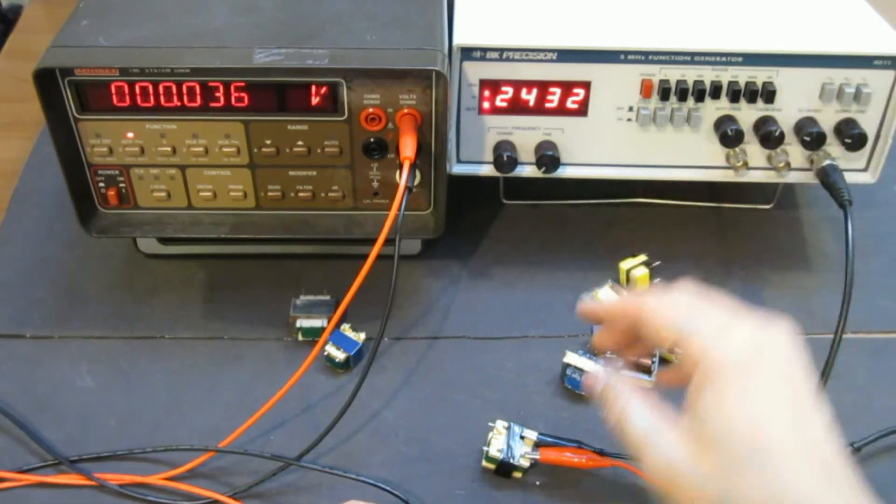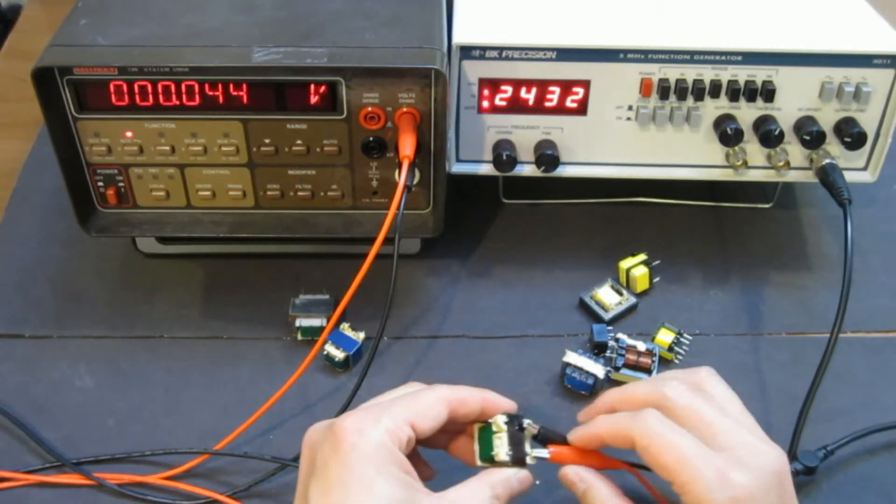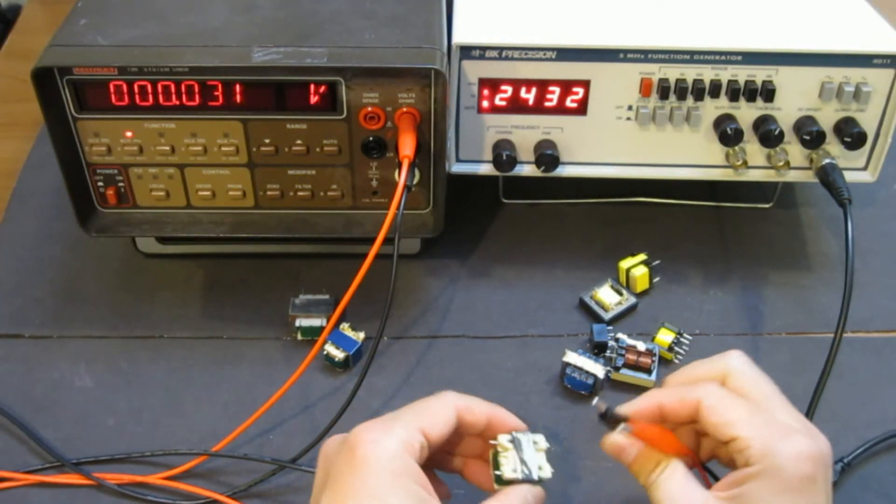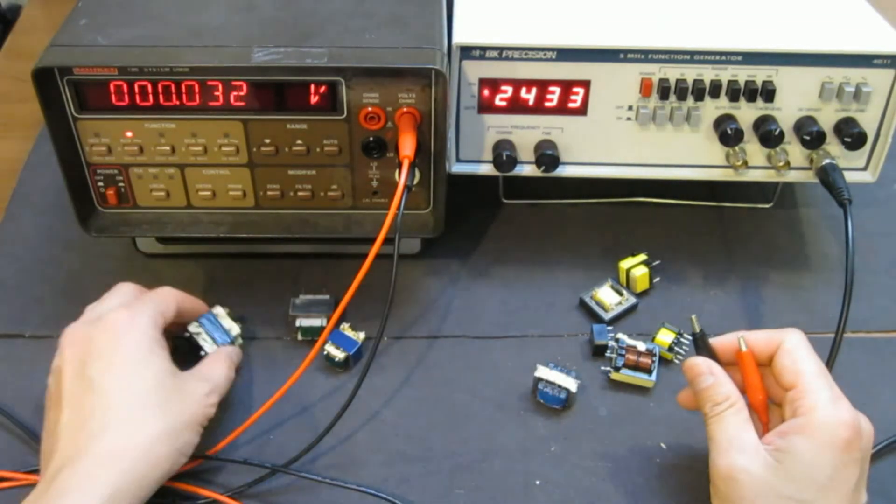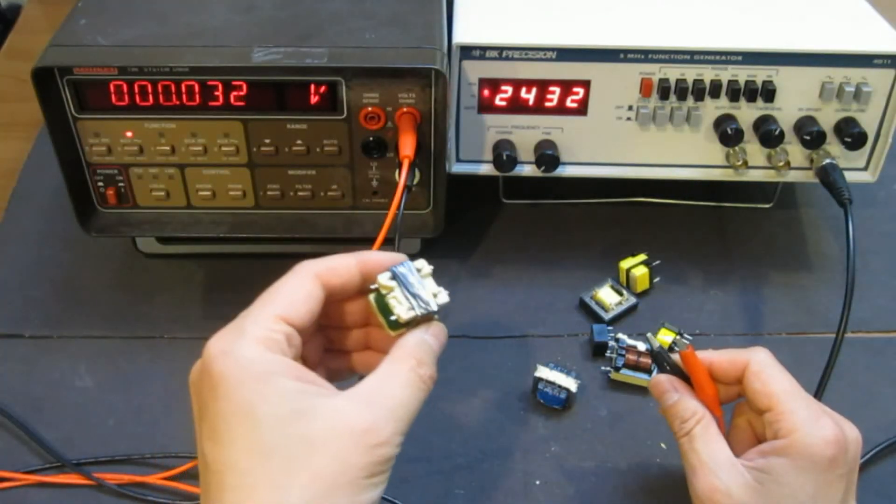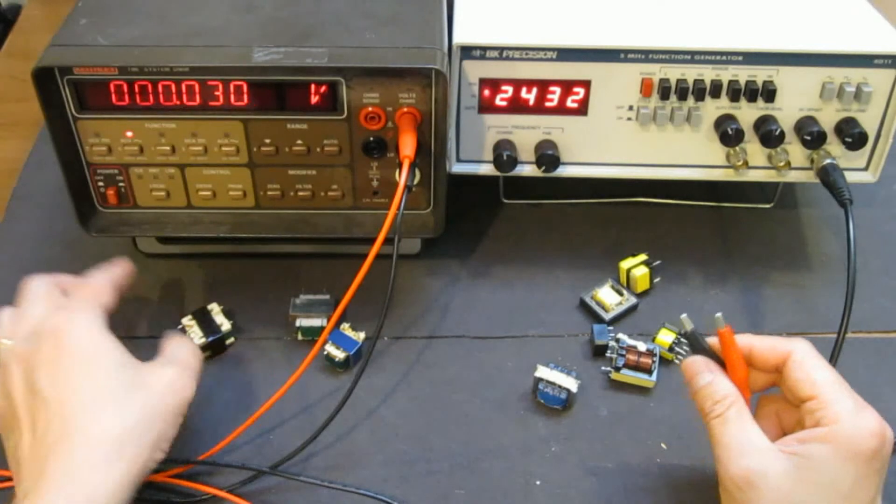So basically, this range, 1 to 70-ish range is, sorry, for this transformer, the ratio is 1 to 70, approximately.